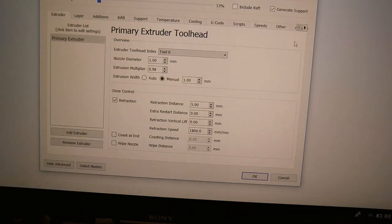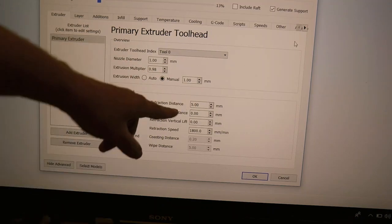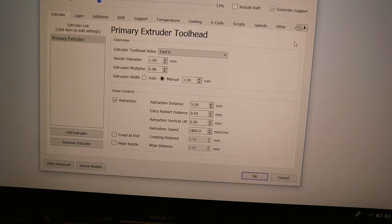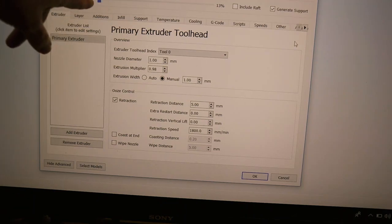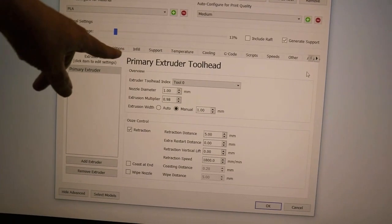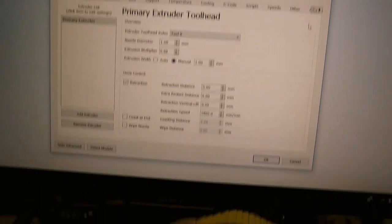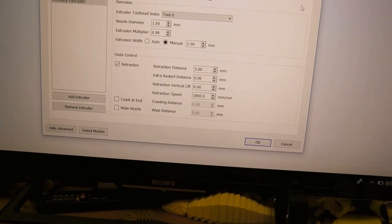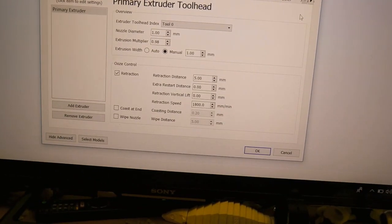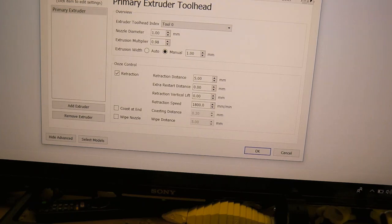I haven't touched my multiplier, and I haven't touched my retraction distance, and I haven't touched the coasting. Those are all going to remain the same. I'm using about 10% infill here. I know it says 13, but it should be about 10. Because it's thicker infill, I don't need as much. Now the next page, which is layer.